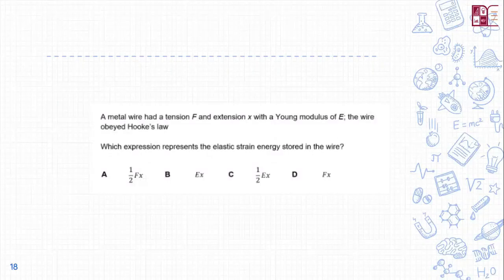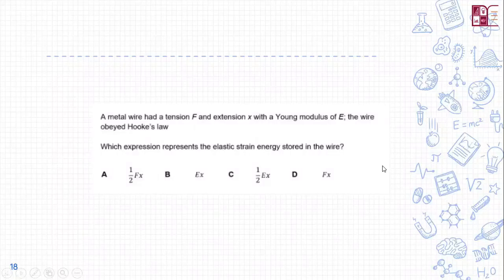Question 7: A metal wire has tension F and extension x with a Young's modulus of E, and obeys Hooke's Law. Which expression represents the elastic strain energy stored in the wire? This question is not part of the upcoming syllabus, but the answer is one-half times force times extension: ½Fx.